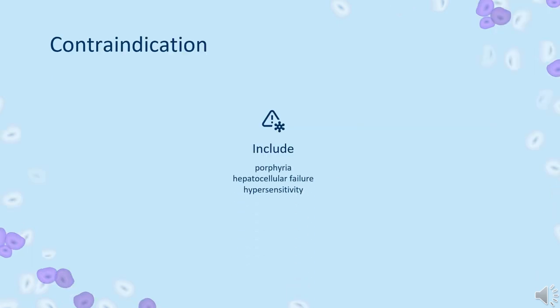Contraindication. This drug is contraindicated in patients with porphyria, hepatocellular failure, and in individuals with a history of hypersensitivity to Griseofulvin. Males should not father children within 6 months of treatment.